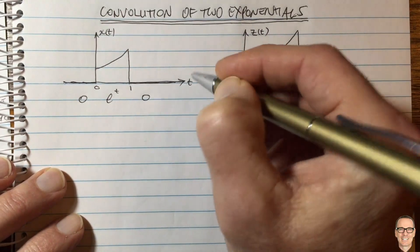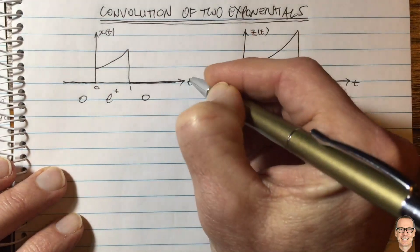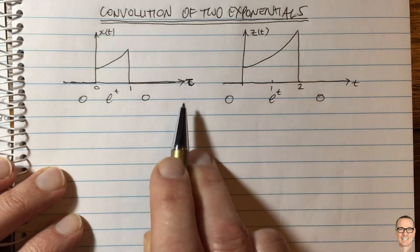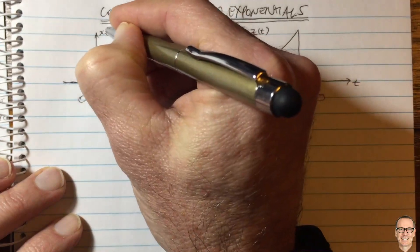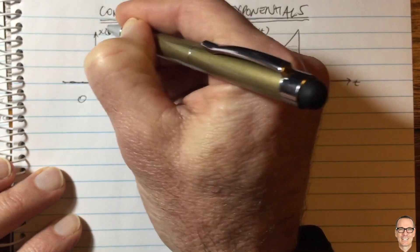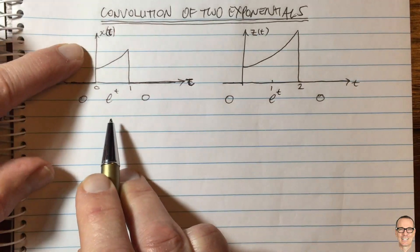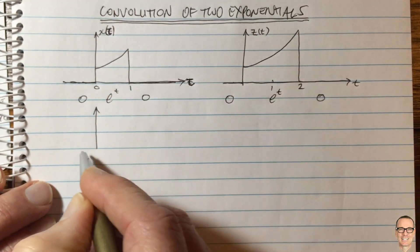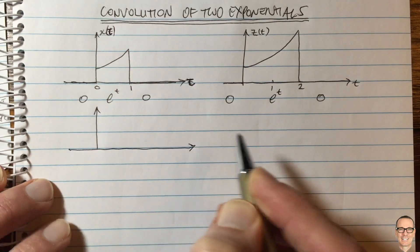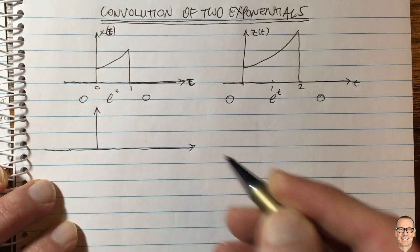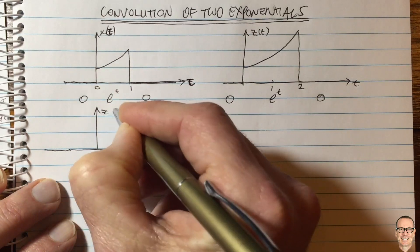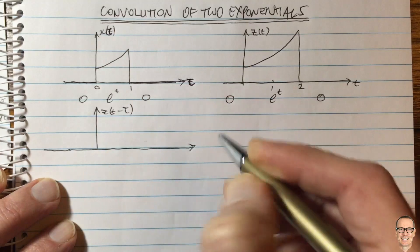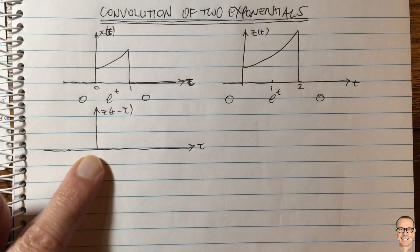For convolution, we need to plot the first function as a function of tau, simply by changing t to tau. Then I like to draw the other function we're multiplying together in the convolution equation — z of t minus tau — because we're going to multiply those two together in the convolution equation.